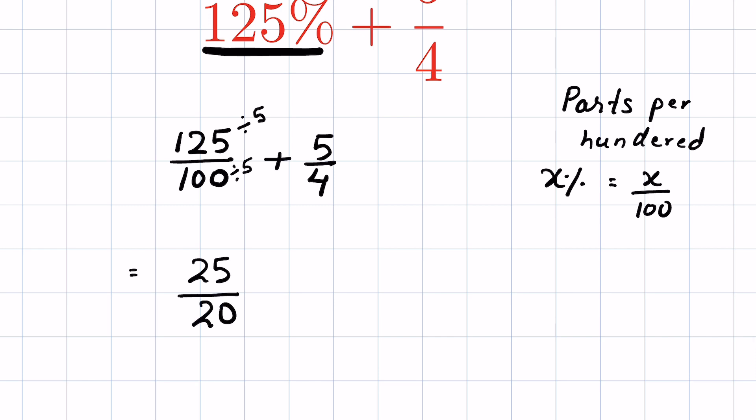We can again reduce this fraction by dividing it by 5. Divide both numerator and denominator by 5. So 25 divided by 5 is 5 and 20 divided by 5 is 4. So 125 percent is equal to 5 upon 4.